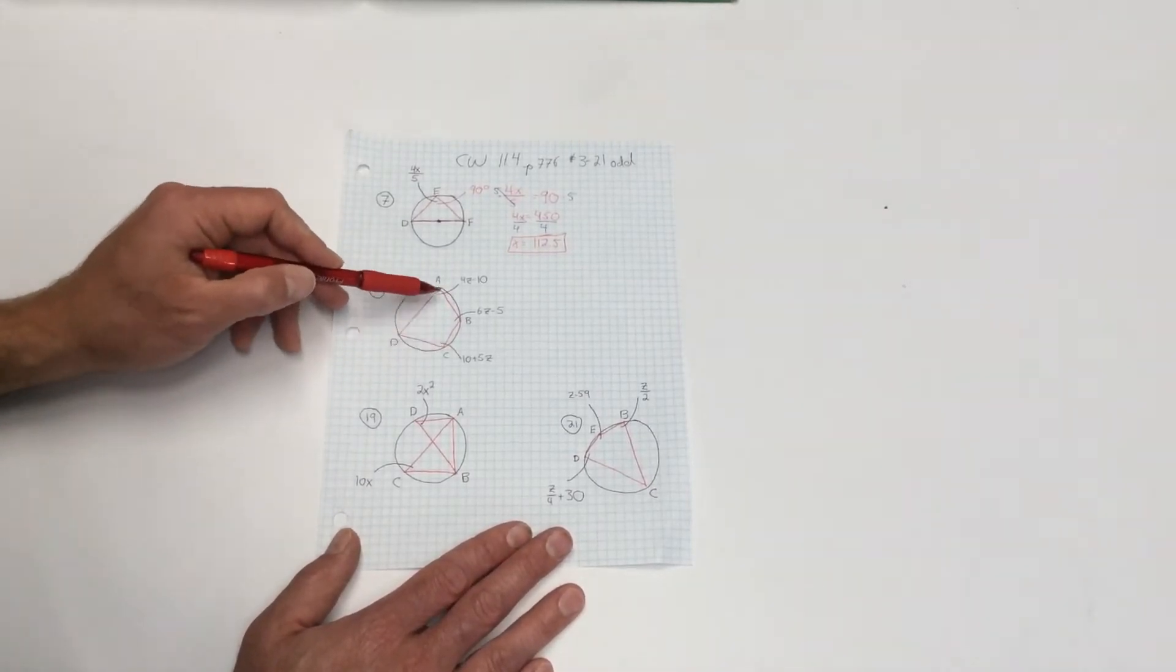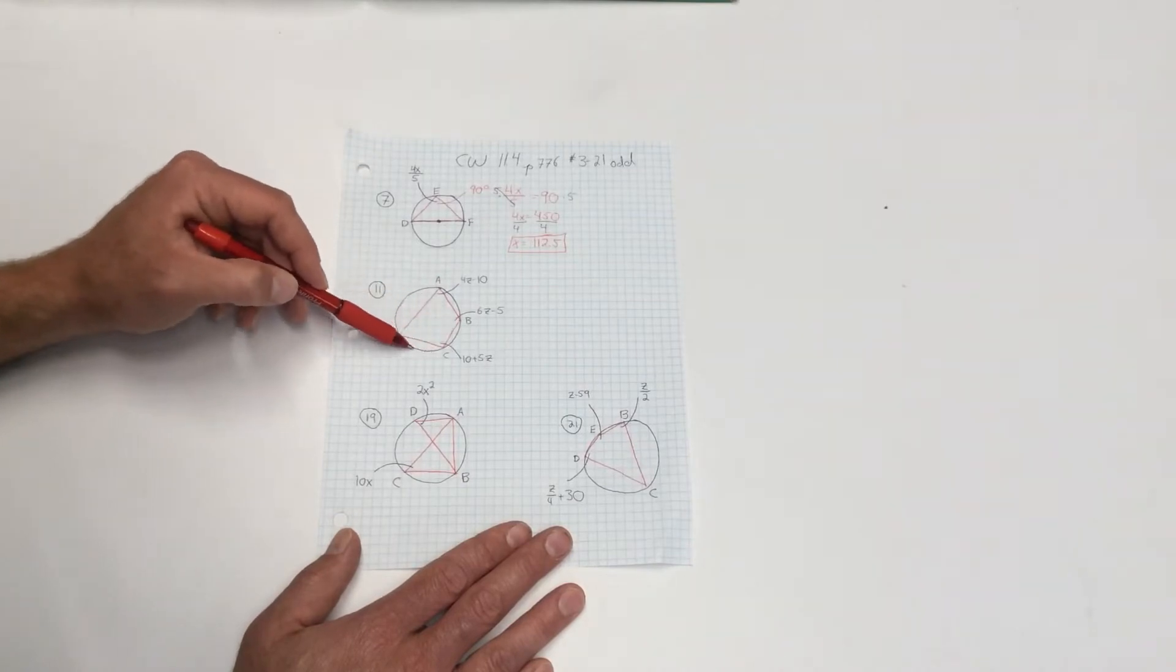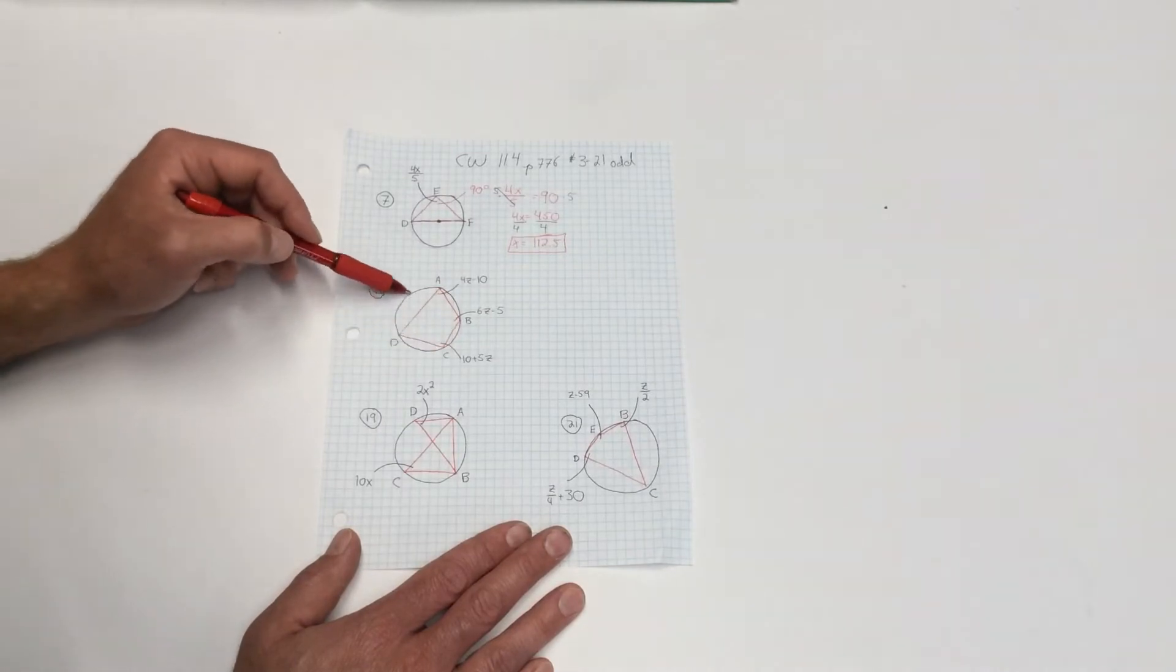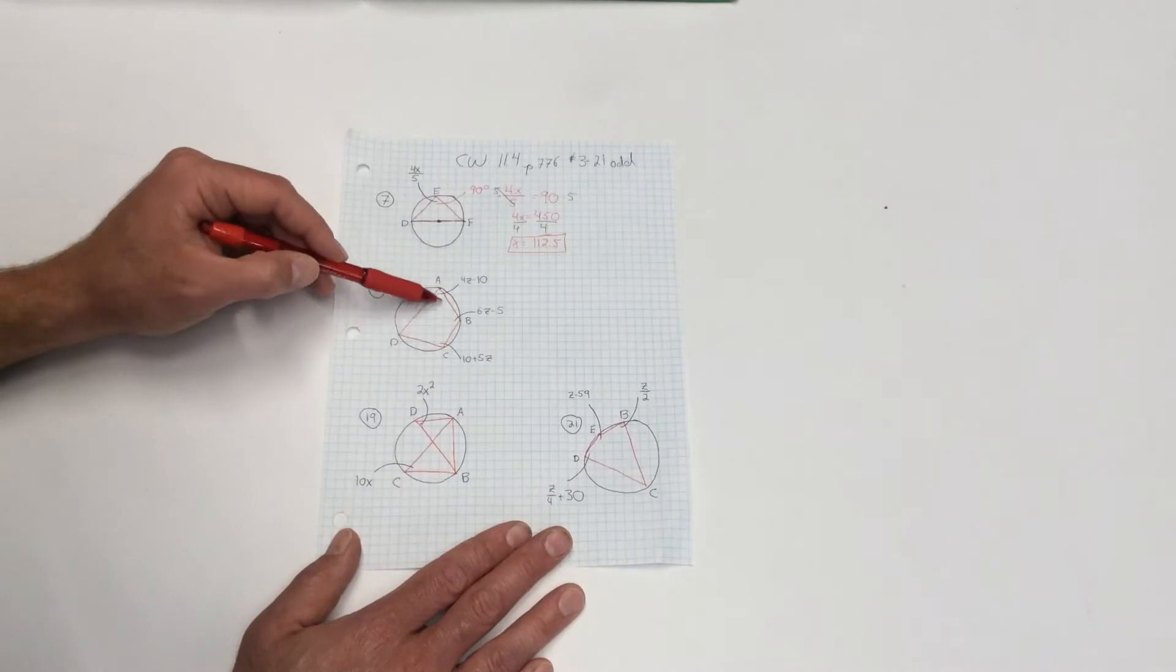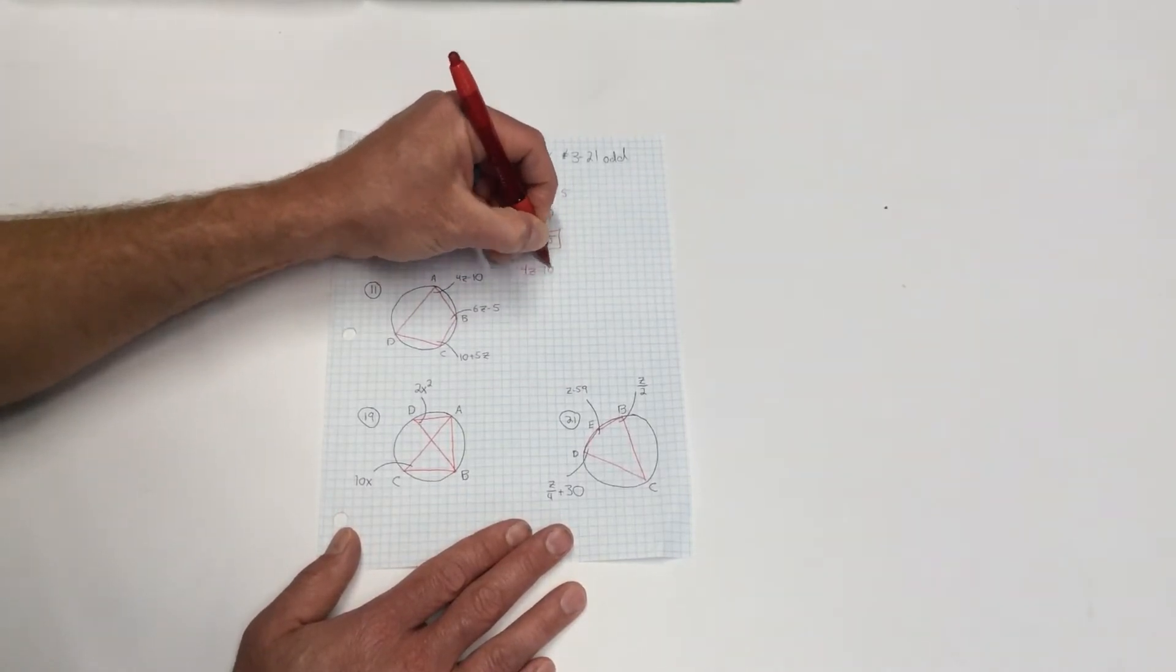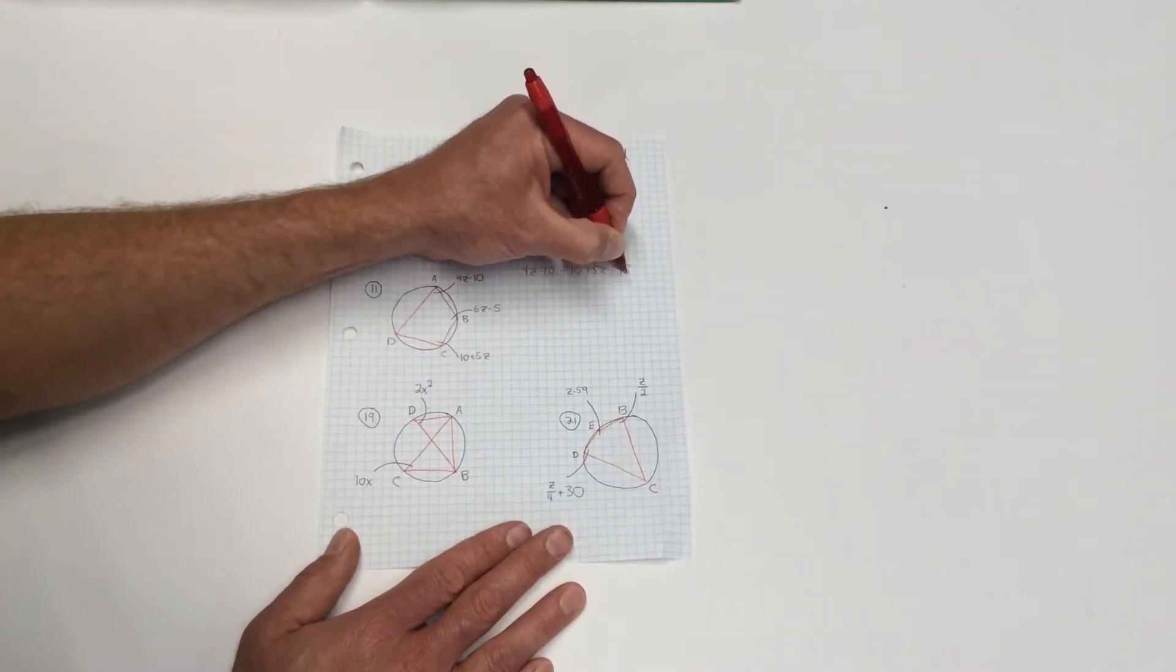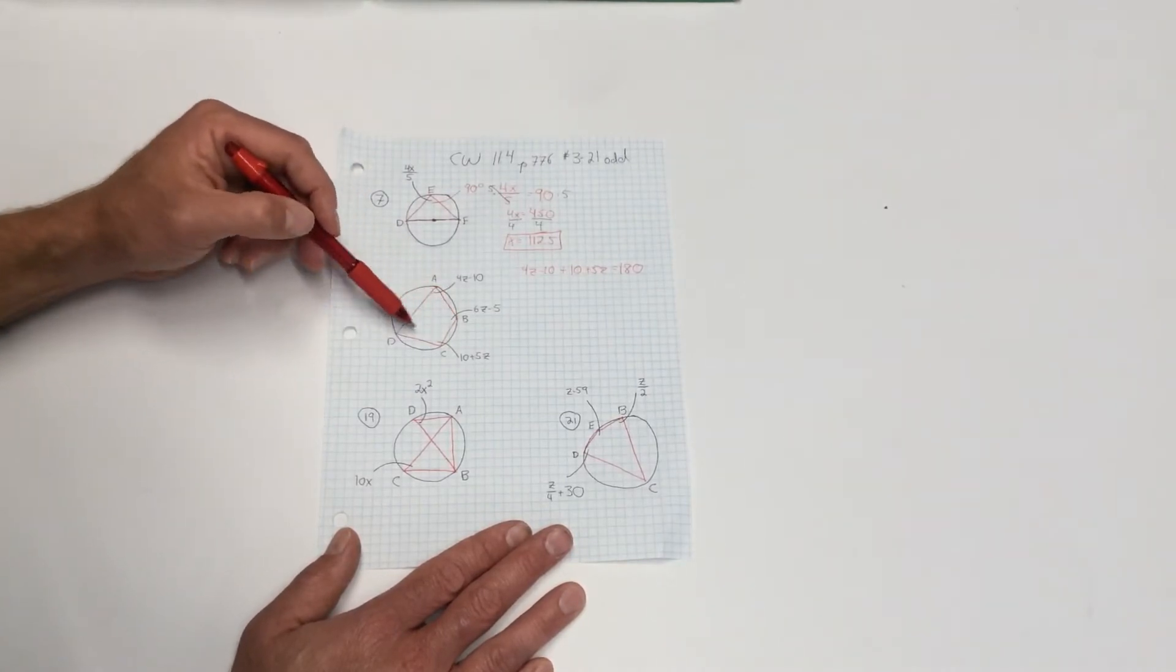So what did we learn? Well, we learned that opposite inscribed angles, because together, angle C covers this half of the circle, and angle A covers this half of the circle. Together, they've got all 360 degrees covered. So added together, and since they're half of that, that means together, these two opposite angles of a quadrilateral must equal 180 degrees.